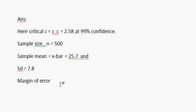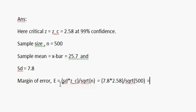Margin of error E equals sd times z_c divided by square root of sample size n, which is equal to 7.8 times 2.58 divided by square root of 500. Using calculator we get the simplified value equal to 0.8999.